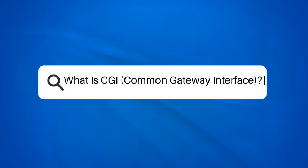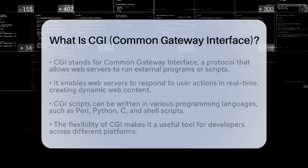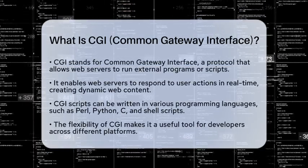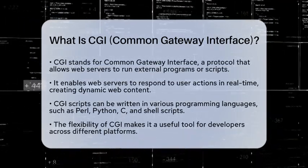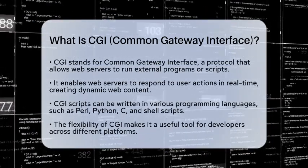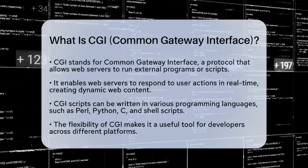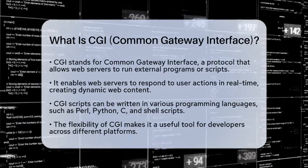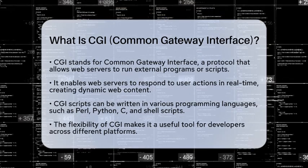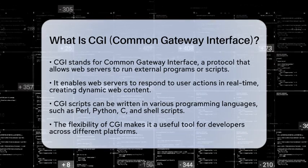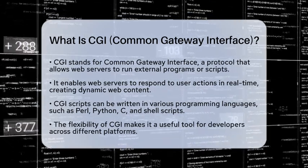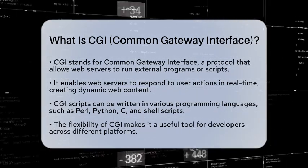What is CGI — Common Gateway Interface? Have you ever wondered how websites can respond to your actions in real time? One of the key players in making that happen is the Common Gateway Interface, often referred to as CGI. This protocol allows web servers to execute external programs or scripts when they receive requests from users. It acts as a bridge between the web server and applications, enabling the creation of dynamic web content.